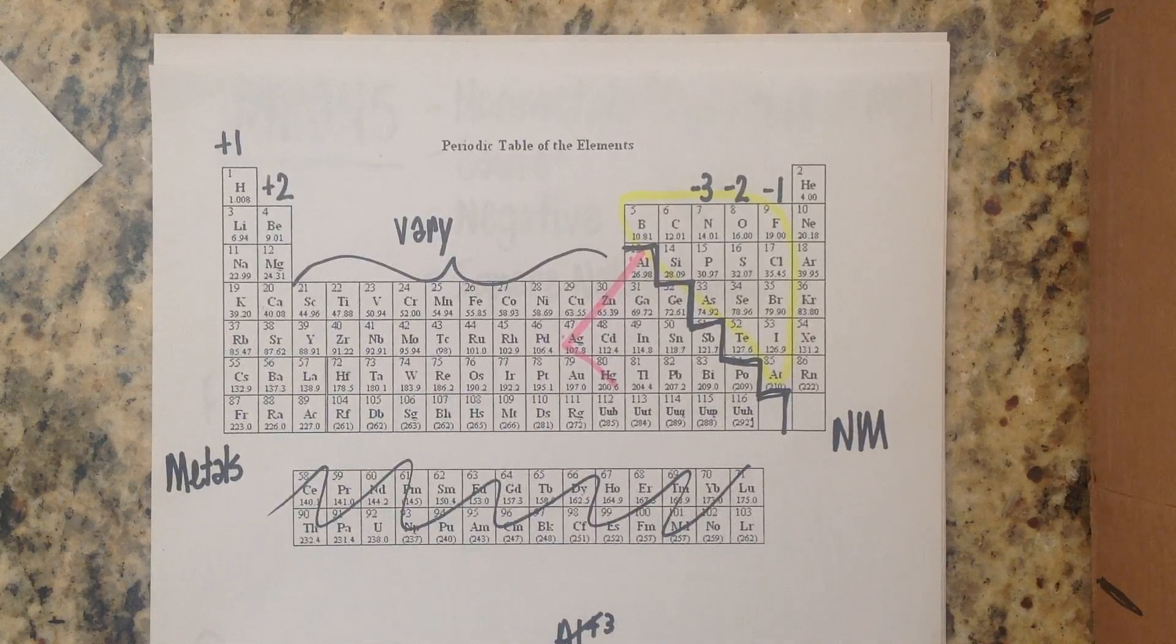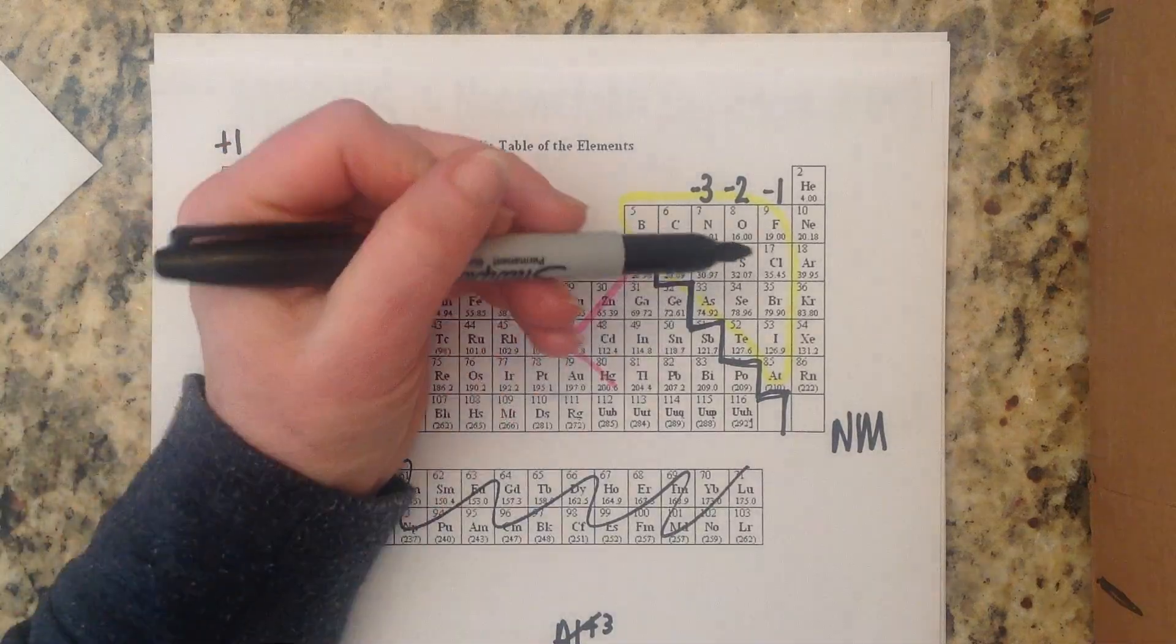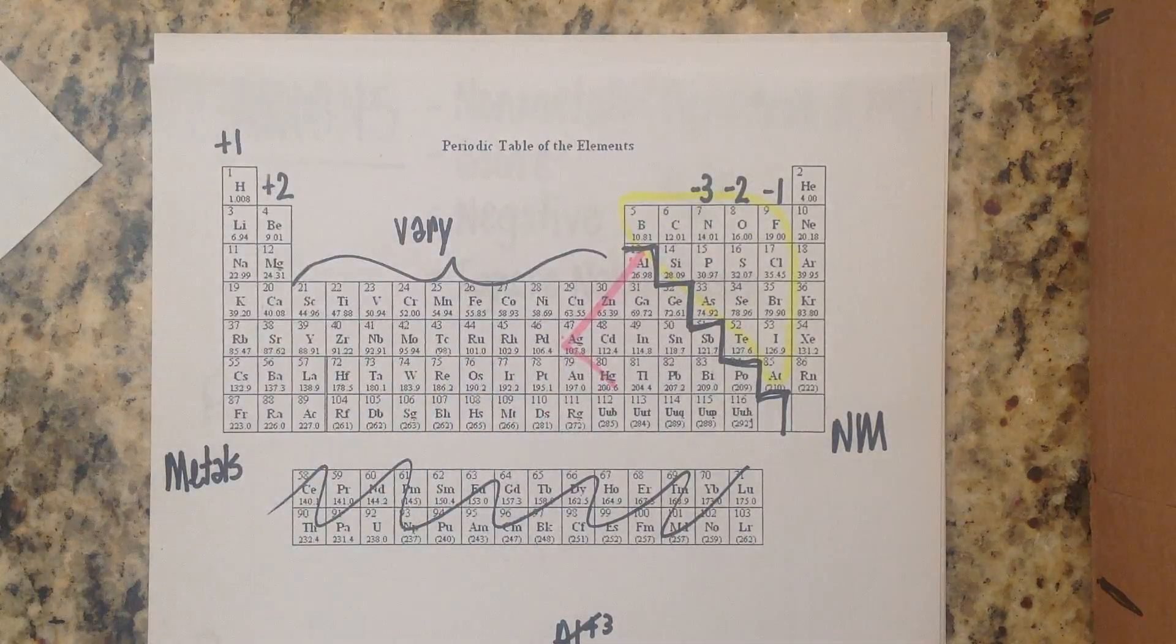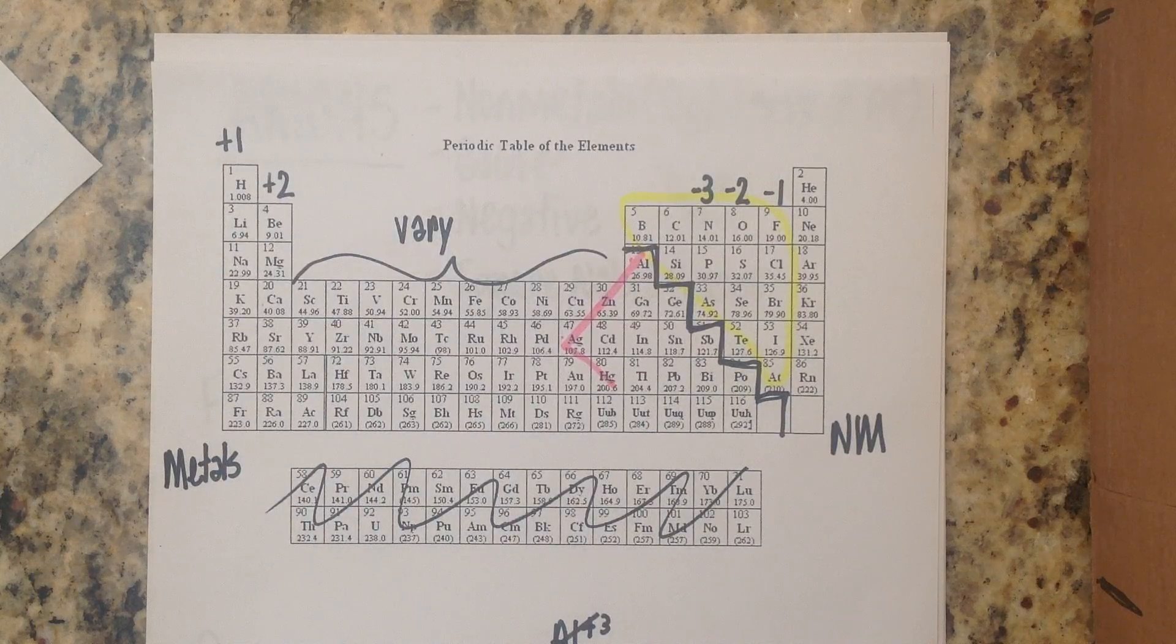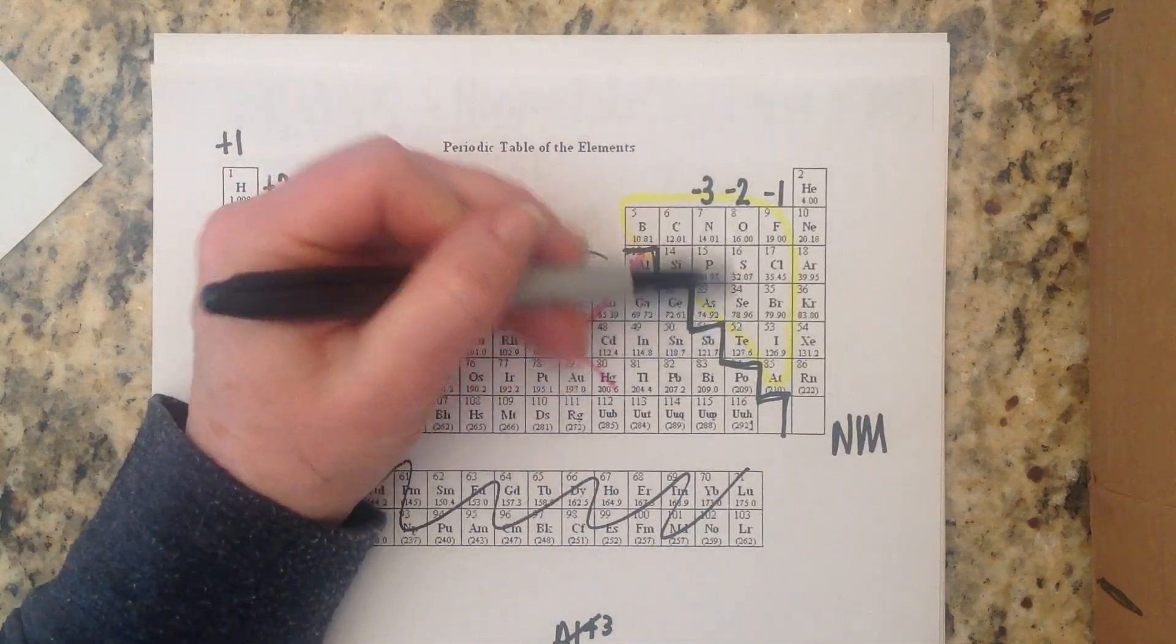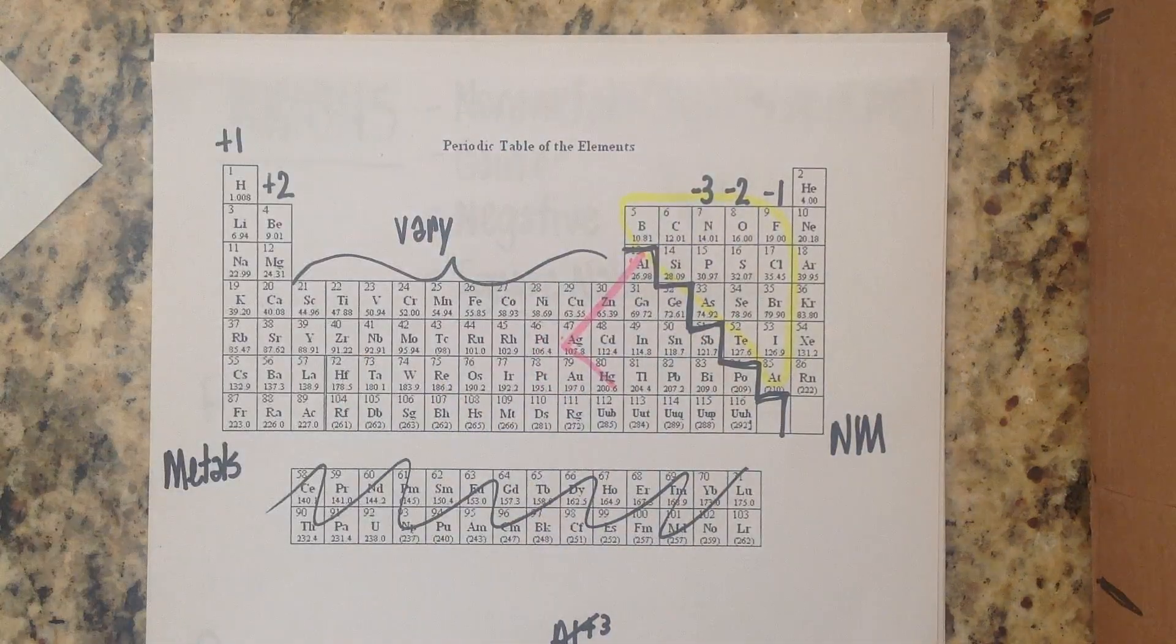So really beginning chemistry students the main thing you need to know is that the halogens have a charge of negative one because they're going to steal one electron bringing that seven valence electrons up to eight. This column is going to steal two and this column is going to steal three.